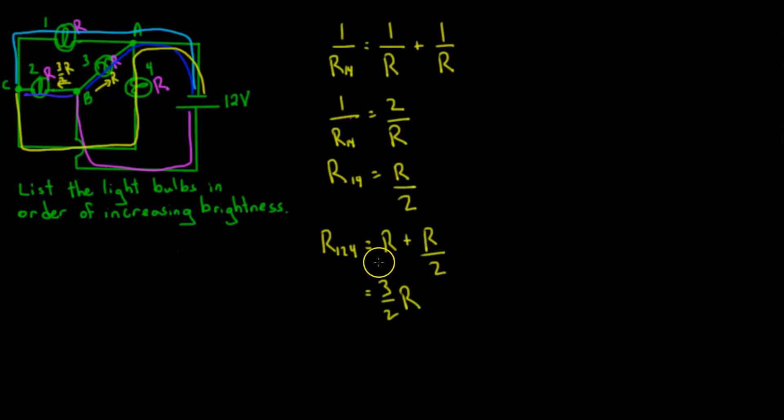So what that tells us is, since that resistance at R_3 is going to be less than the resistance of R_124, the current I_3 will be greater than the current that goes to I_124.